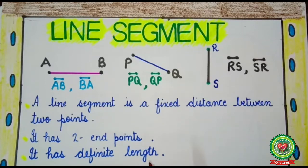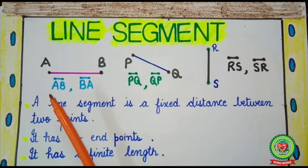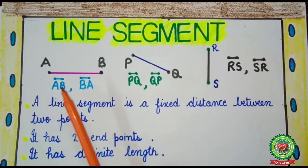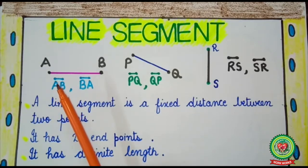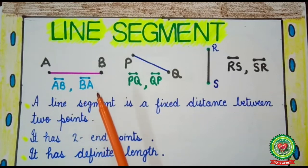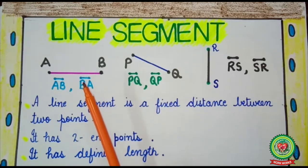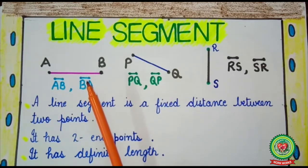Now how will you identify that it is a line segment? You will name it as AB with the symbol of a line segment. You can also write it as BA using the symbol of a line segment.